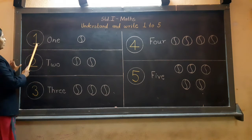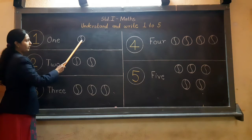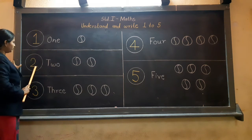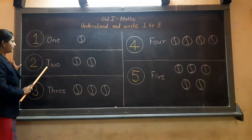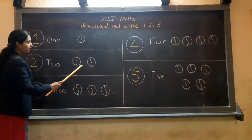Number 1: O-N-E, one. It is written with a vertical line. Number 2: T-W-O, two. Let's count: 1 and 2.